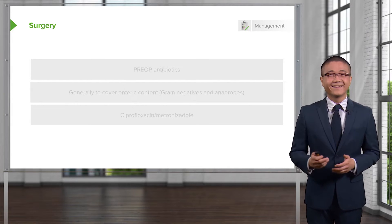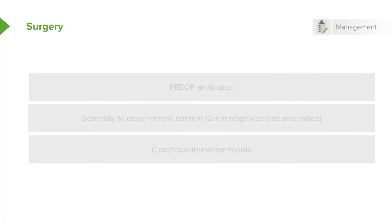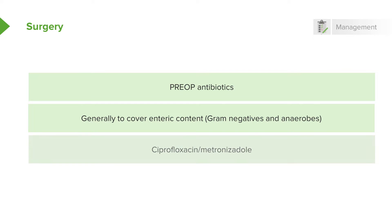Now that you've decided the patient needs surgery, how do we prepare a patient for surgery? Everybody gets preoperative antibiotics. Specifically, we want to cover enteric content — meaning intestinal flora. In the colon, gram-negatives and anaerobes predominate. Our antibiotic choice can be a first-generation cephalosporin or fluoroquinolone combined with anaerobic coverage. On the slide you see ciprofloxacin and metronidazole, which is a classic combination.